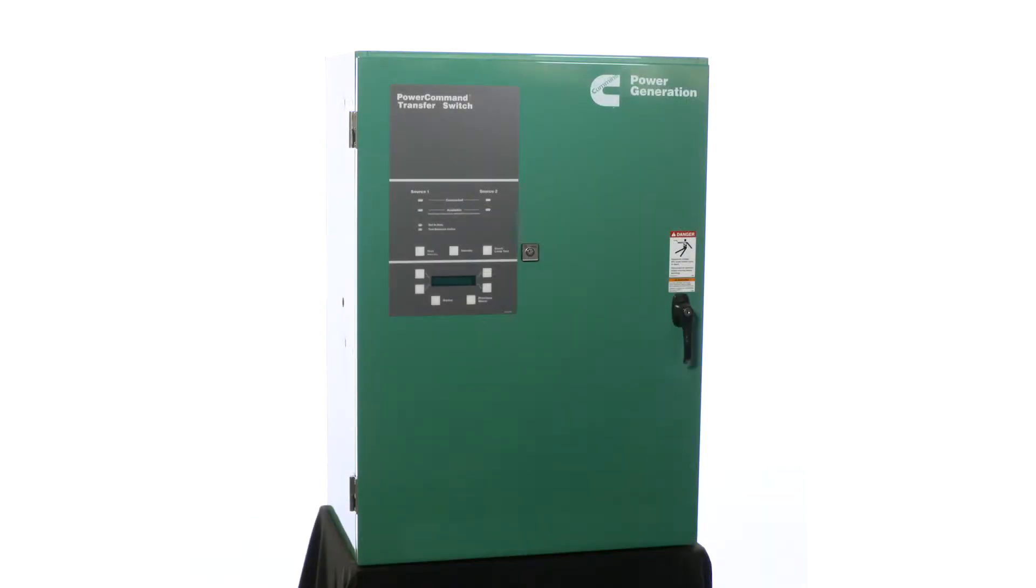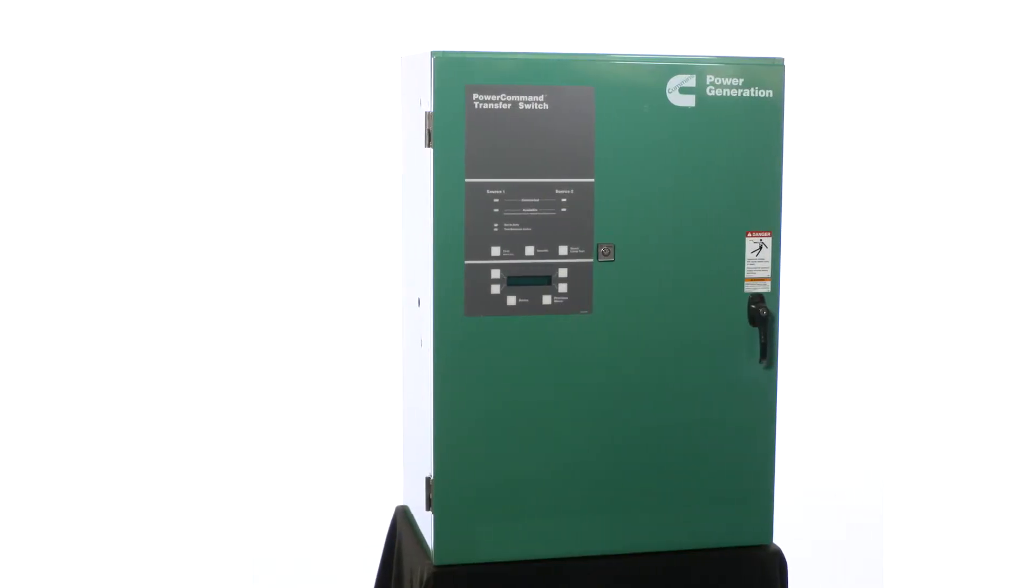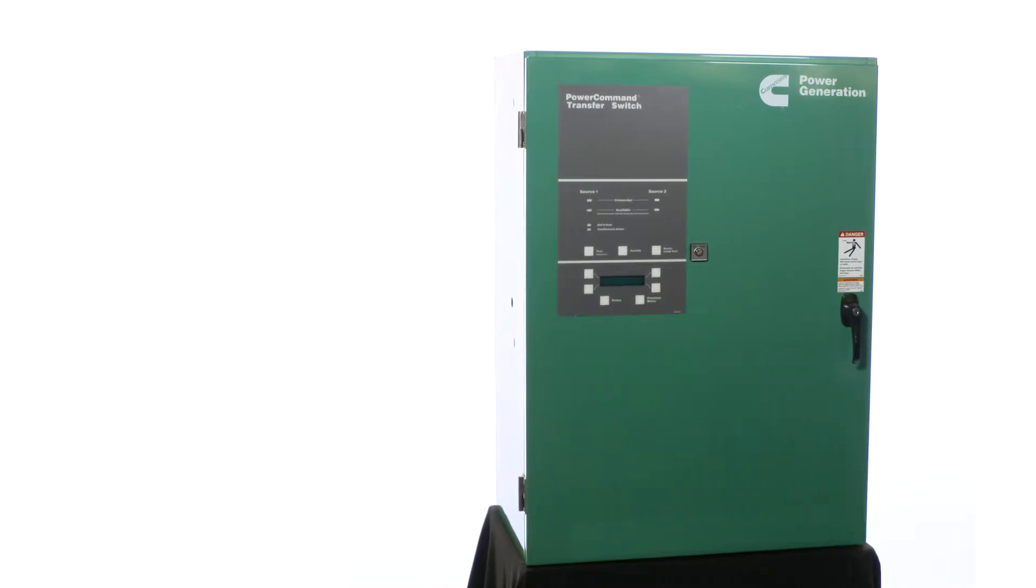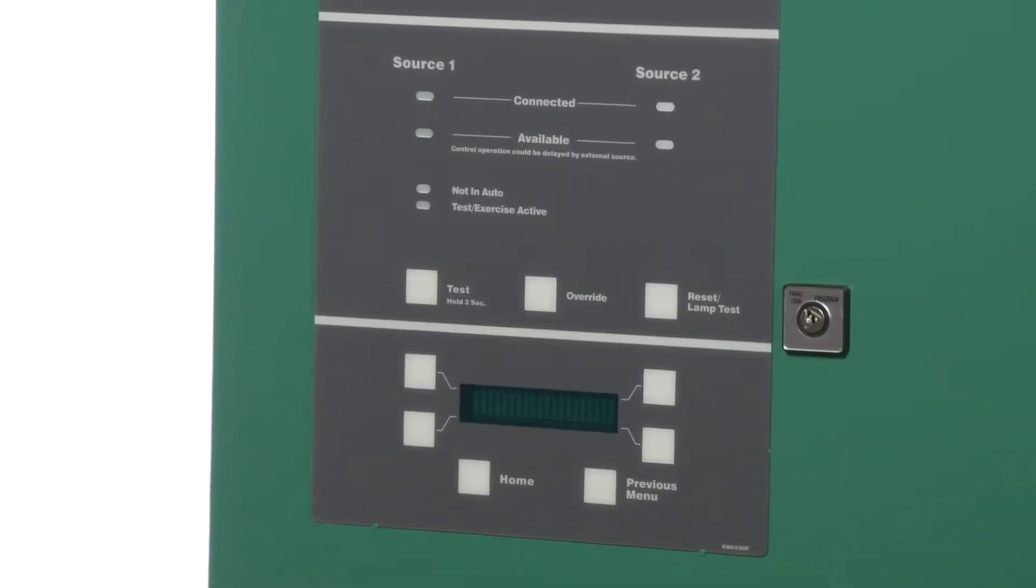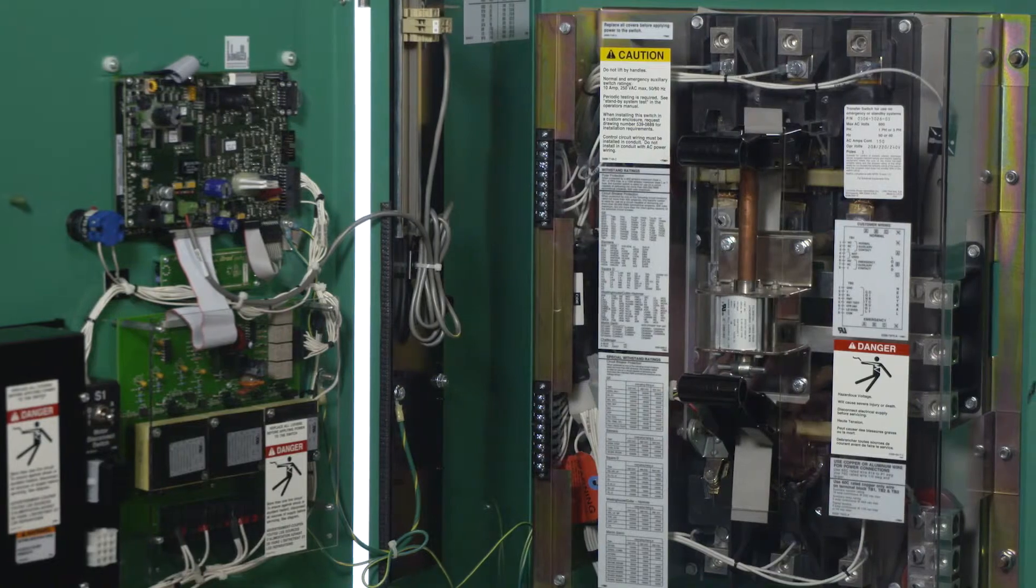Here is an automatic transfer switch. The key components of an ATS are the switch mechanism, the control, and enclosure. The control is mounted on the outside of the door. If you open the door, you will see a mechanism like this.